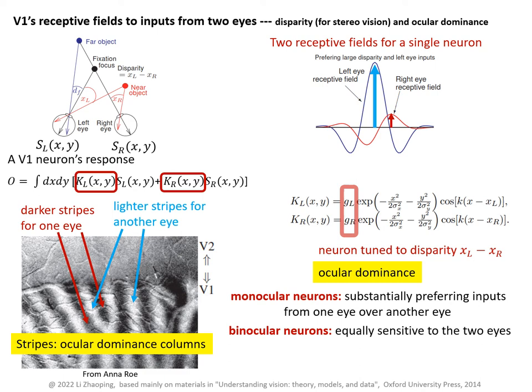Each stripe is about 400 microns thick. This image also includes a segment of the neighboring brain region V2, which is the next stage along the visual pathway from V1. There are no ocular dominance columns in V2 because all V2 neurons are binocular. This difference between V1 and V2 is very useful to identify brain areas for specific visual processes, as we will see later.